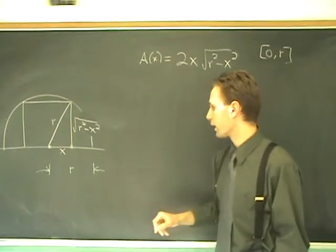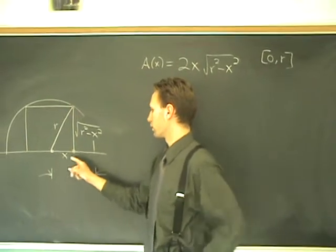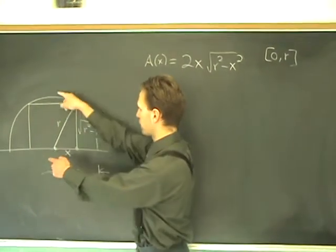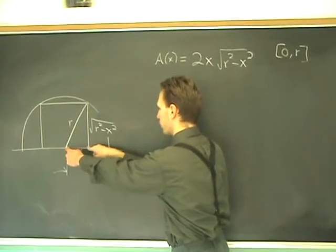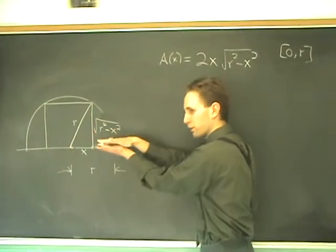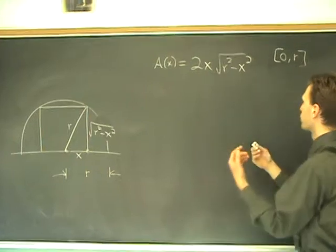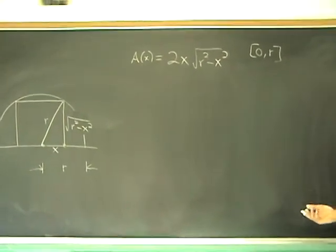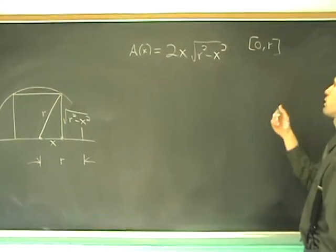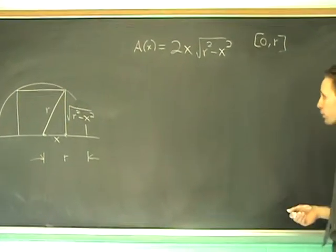But you can see, in either case, if X is 0, then this segment is 0 and you cease to have a rectangle. And if X is R, then this point here is over here and, again, you cease to have a rectangle. Plus, you can also plug in 0 or R into the area function and get 0 out of it. So, it's 0 at the end points, so we've got to hunt for critical numbers.